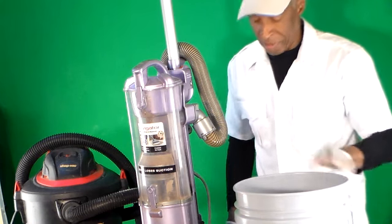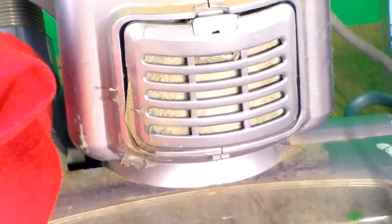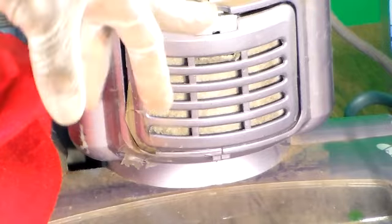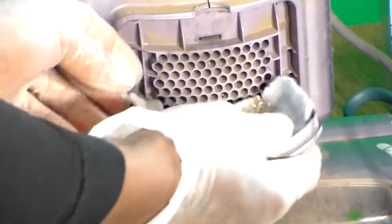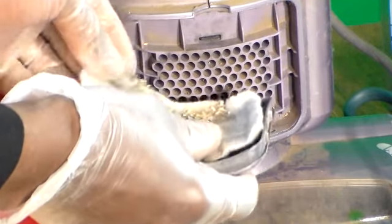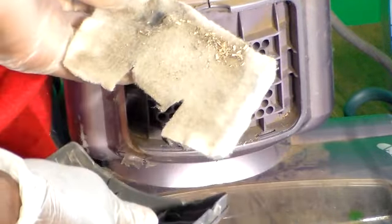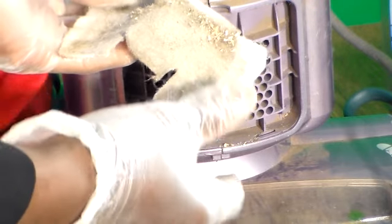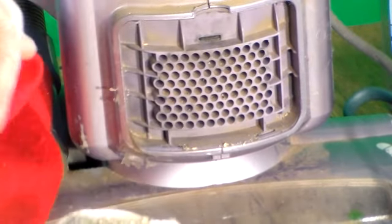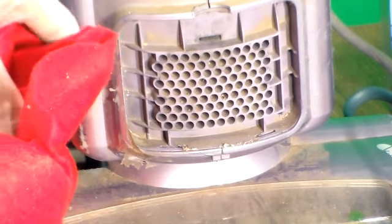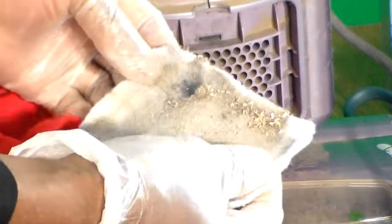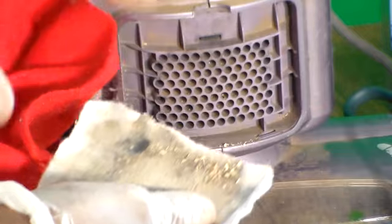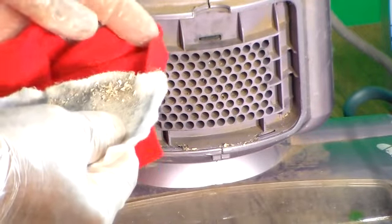On this vacuum, it has a bottom front filter here. You're just going to press a little latch there and you have it right here. As you can see, it's dirty. You can take your felt.